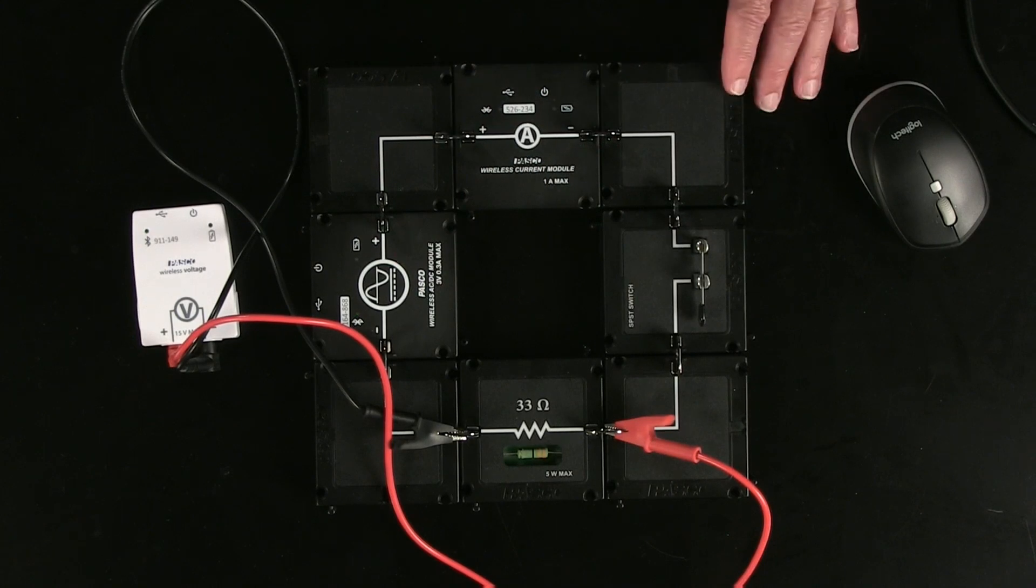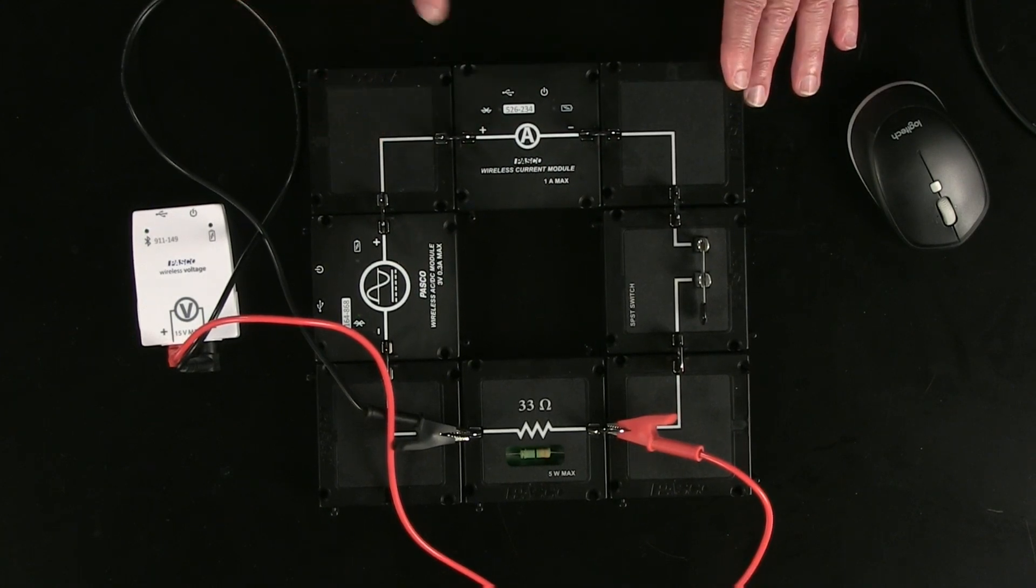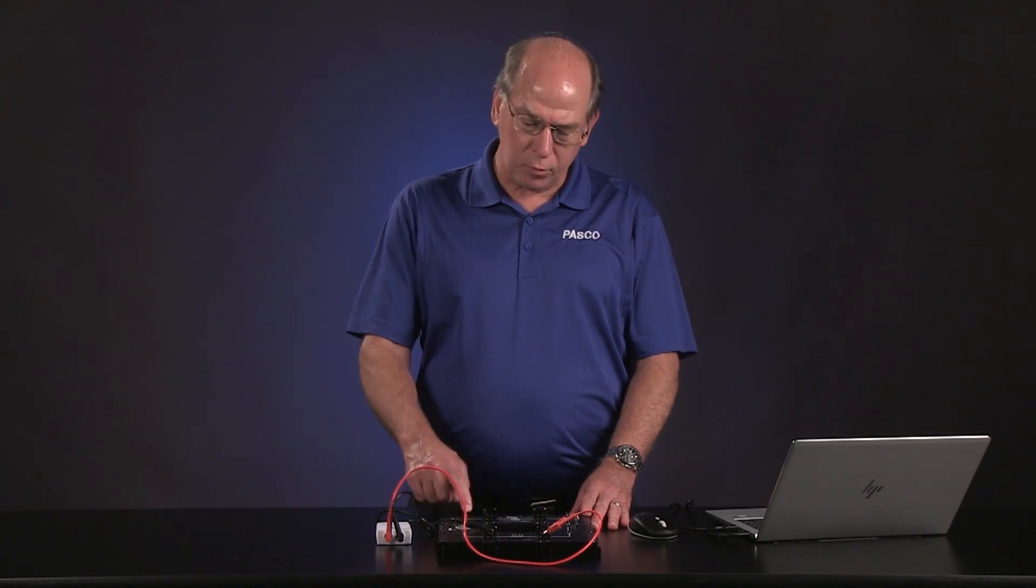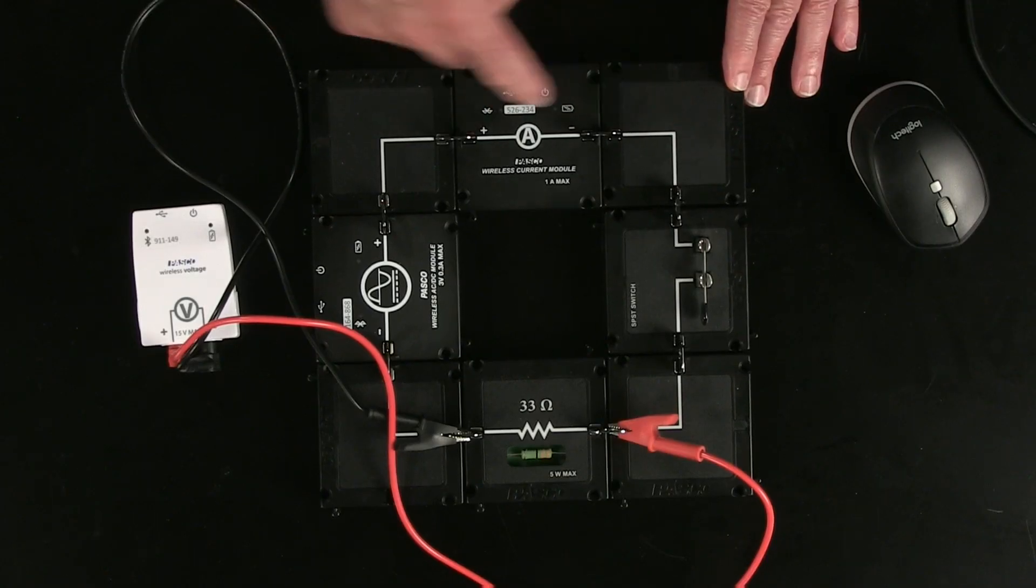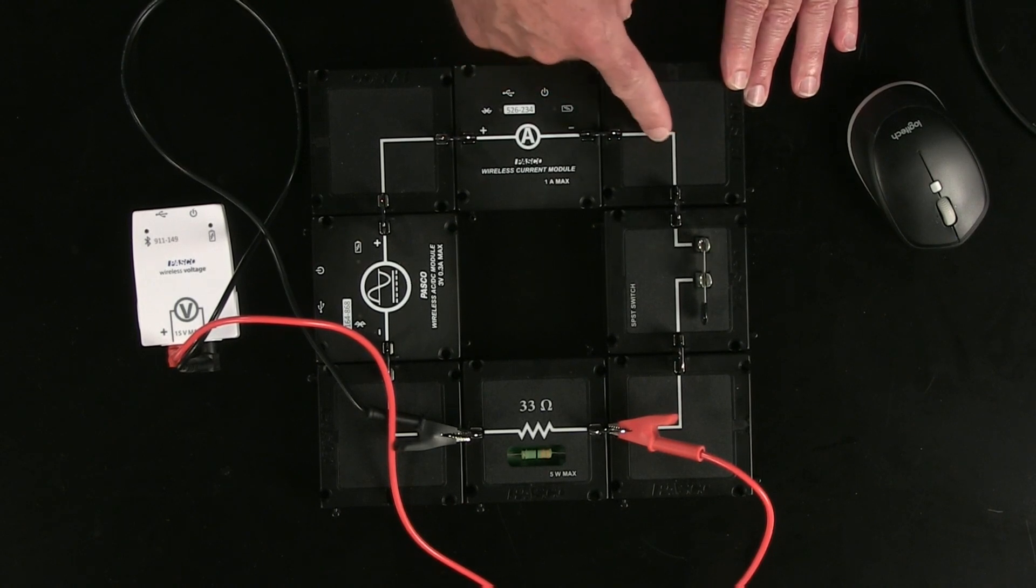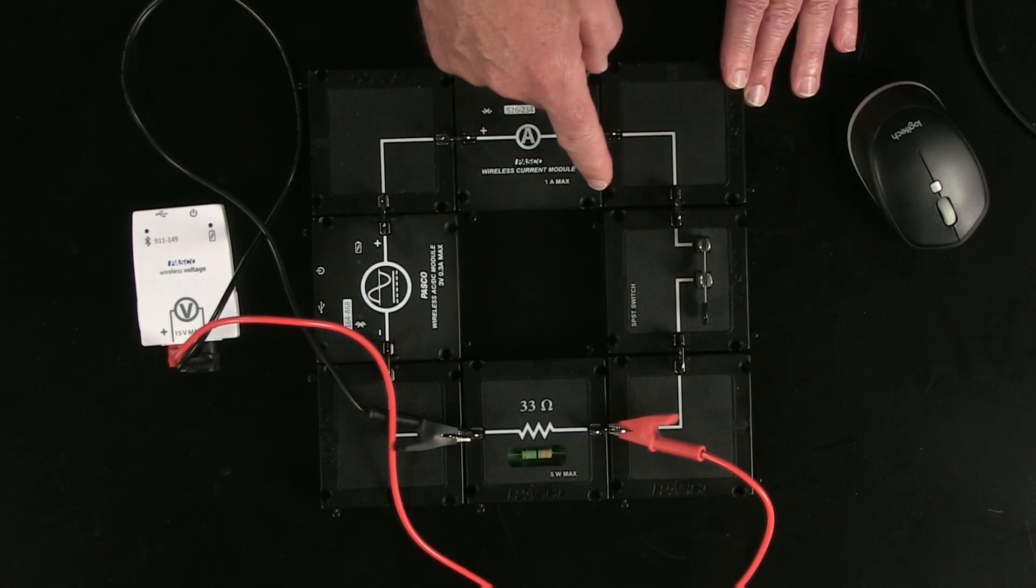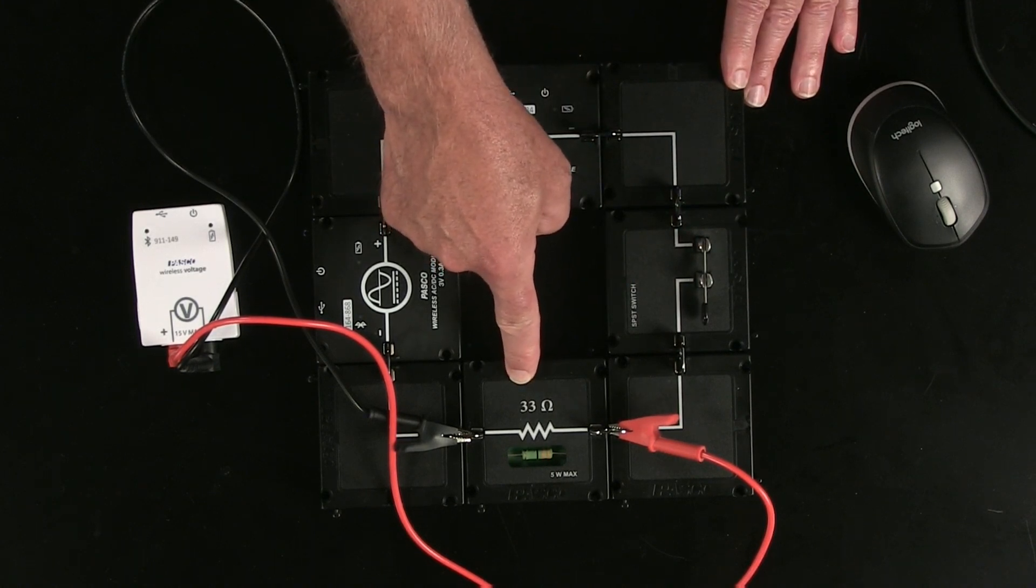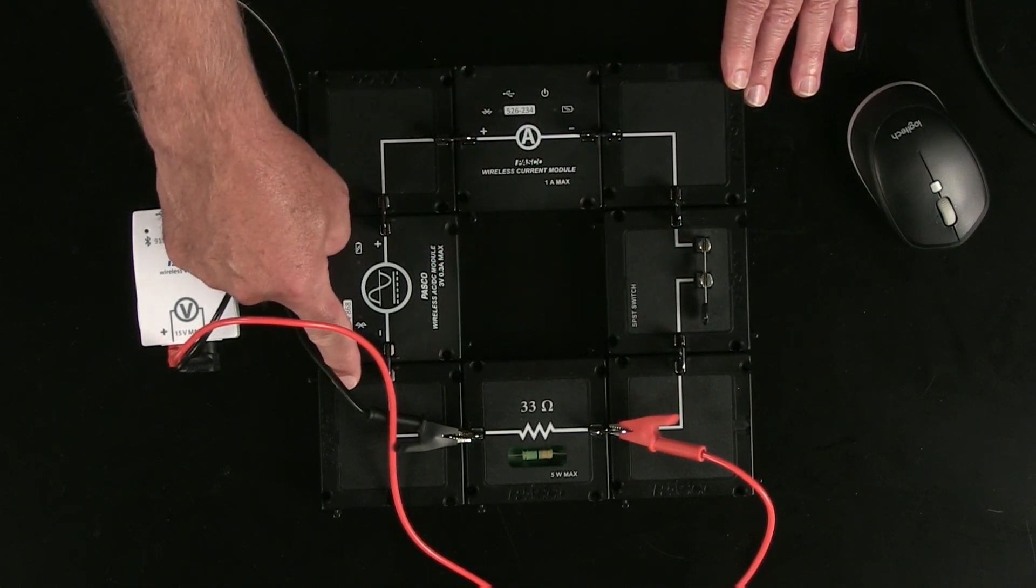We've got a basic circuit here, a wire module, and this is an ammeter. We call it our wireless current module, so it measures the current, the charge passing through it. And another wire module switch, I'll just leave that closed. Another wire module, and then a 33 ohm resistor connected to a wire.